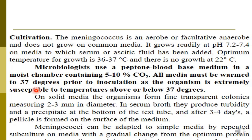On solid media, the organism forms fine transparent colonies measuring 2 to 3 micrometers in diameter. In serum broth, they produce turbidity and precipitate at the bottom of the test tube.